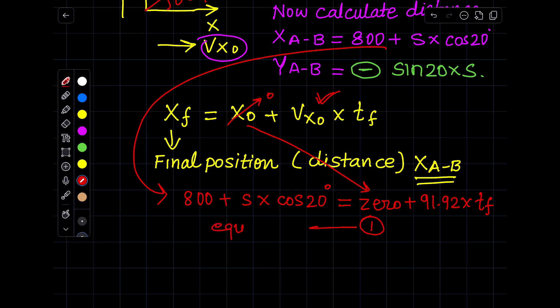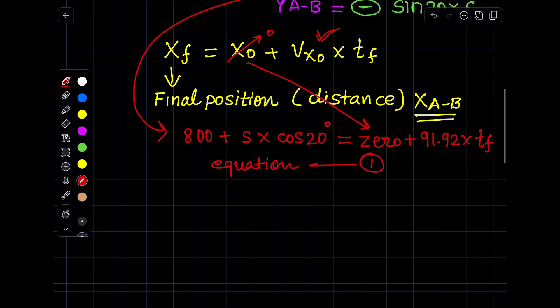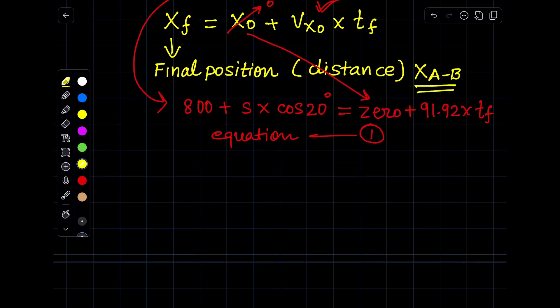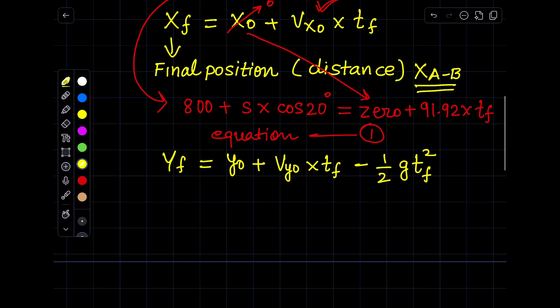Now we will move to calculate the Y range or YF. We will write the very fundamental equation. This equation you have already studied about. YF is equal to Y₀ plus VY₀ multiplied by time of flight minus half g×TF².